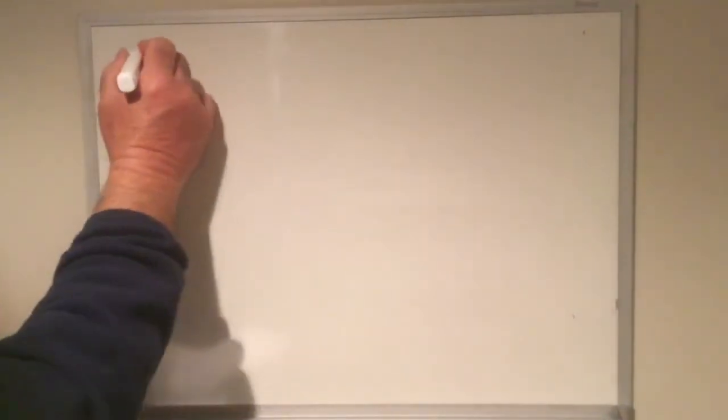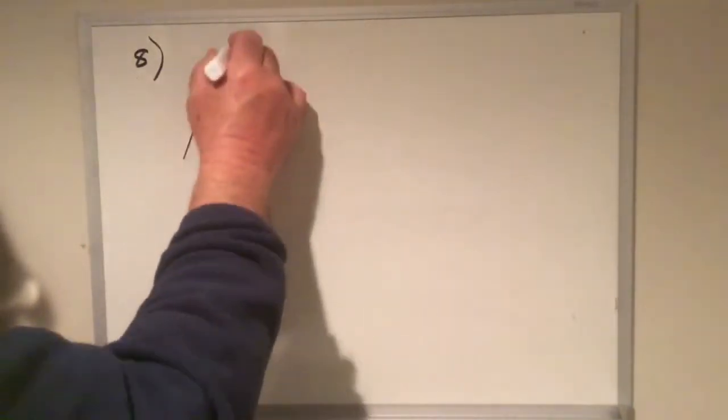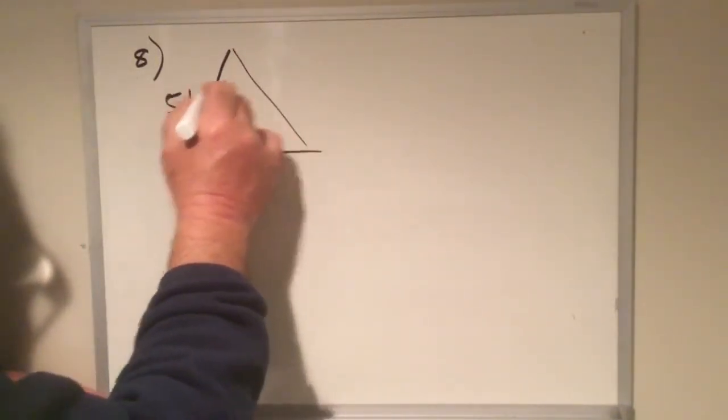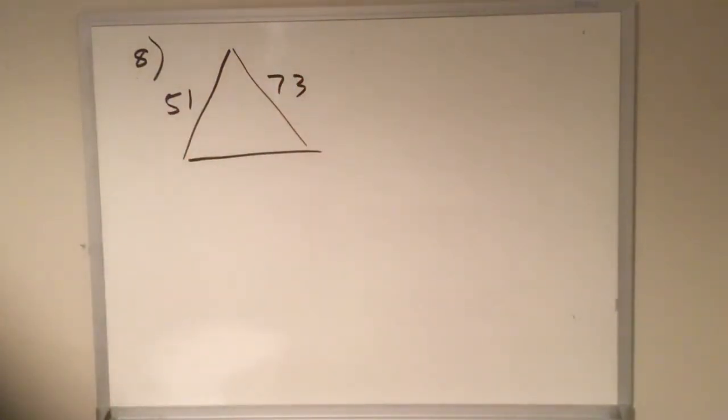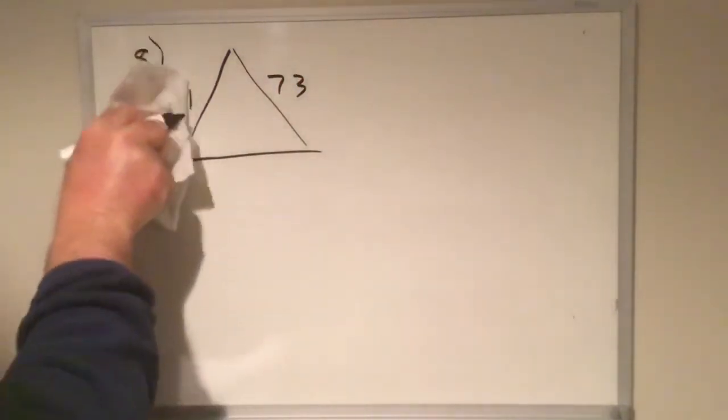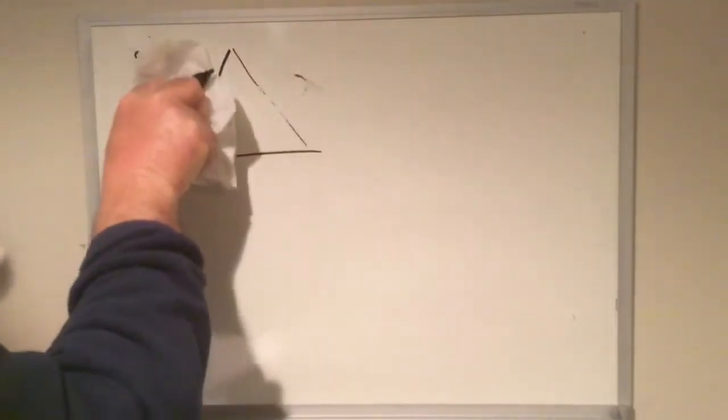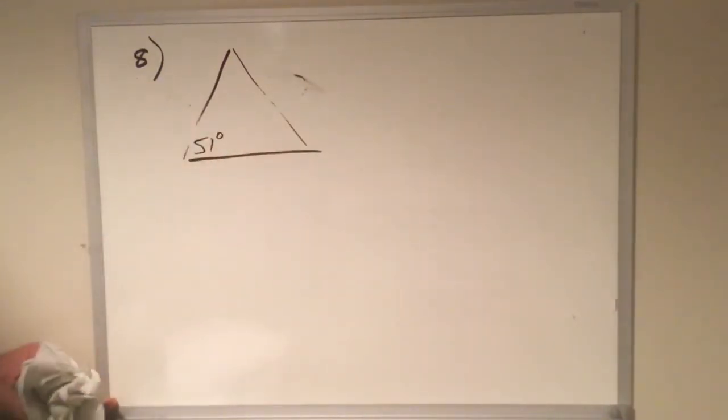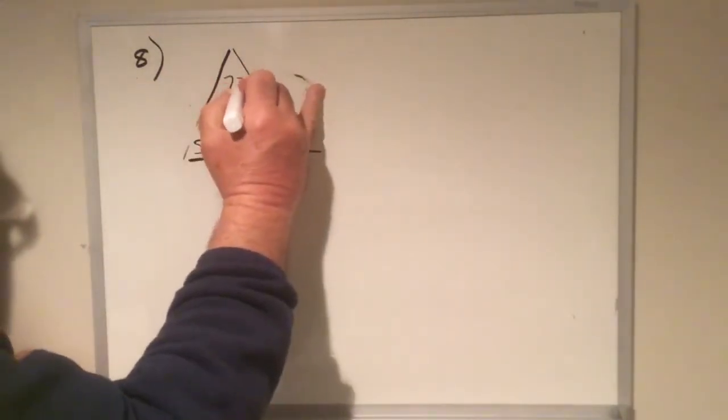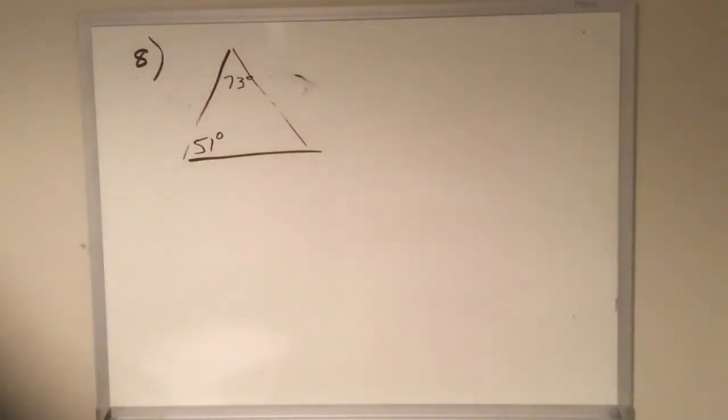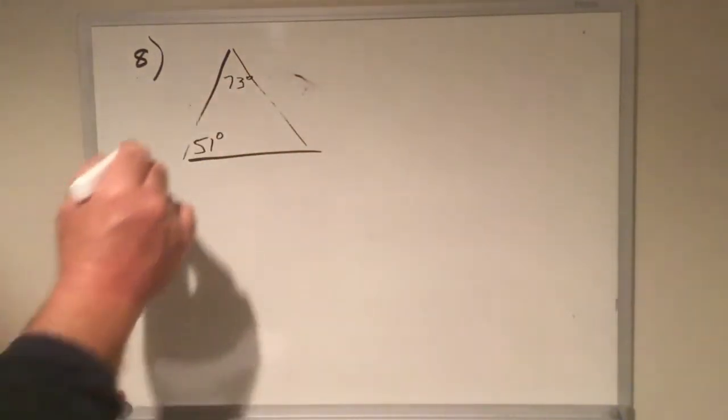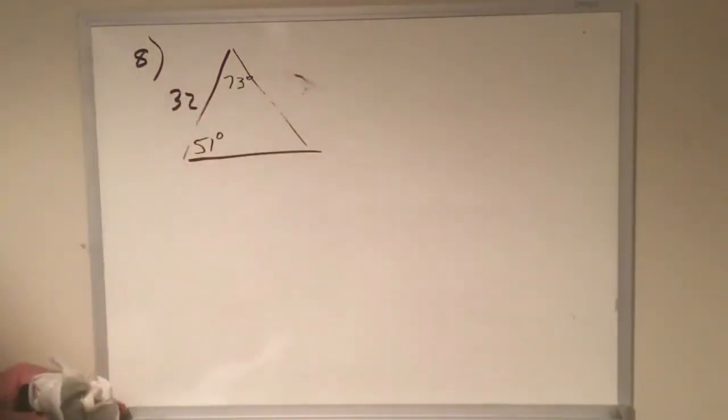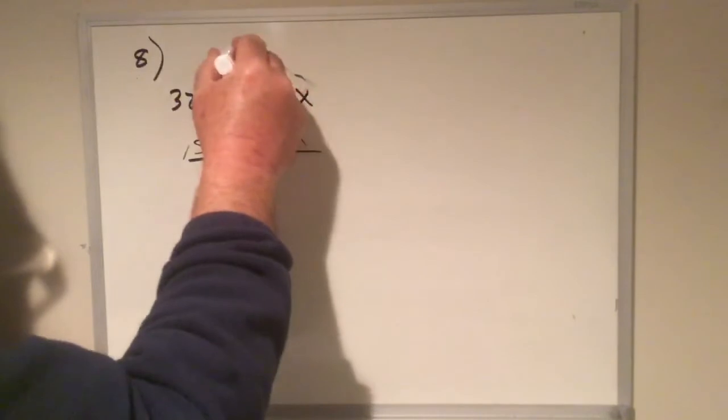Problem number 8. We've got a triangle there. 51, 73. 51 is this angle measure here. 73 is the angle measure. So we've got two angle measures again here. They give us this side length, 32, and they ask us to find this side length, x.